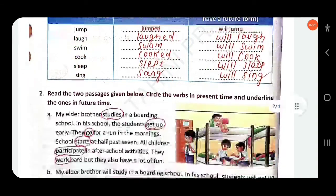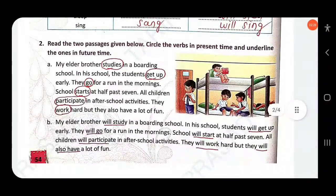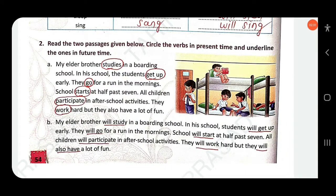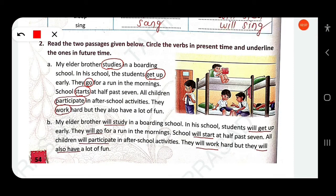Next, read the two passages given below. Circle the verbs in the present time and underline the ones in future time. So you have to circle the present time and underline the future time. In the first passage, 'studies' is simple present.